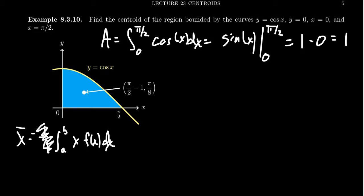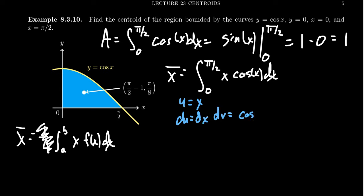We can ignore the 1 over a part because dividing by 1 doesn't do much, which simplifies our calculation. To do x-bar, we're now going to integrate from 0 to pi halves the function x times cosine of x dx. To do this calculation, we're going to have to use integration by parts. We're going to set u equal to x, du equal to dx, dv becomes cosine x dx, and v would then be sine of x.